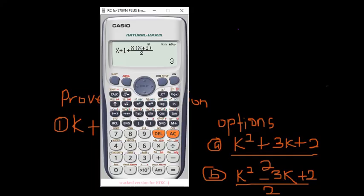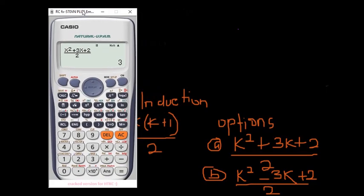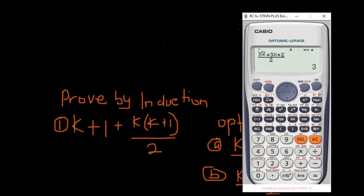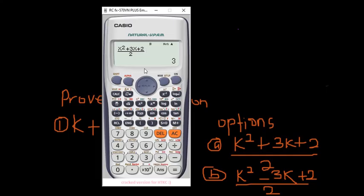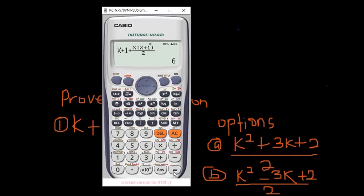After getting that, click on the answer for the first option. We can see that option A also gives 3 — this means option A is the correct answer for this induction question. Let's verify with another value: let's say x=2. You get 6 over here, and 6 for option A as well — it matches, confirming A is the answer.